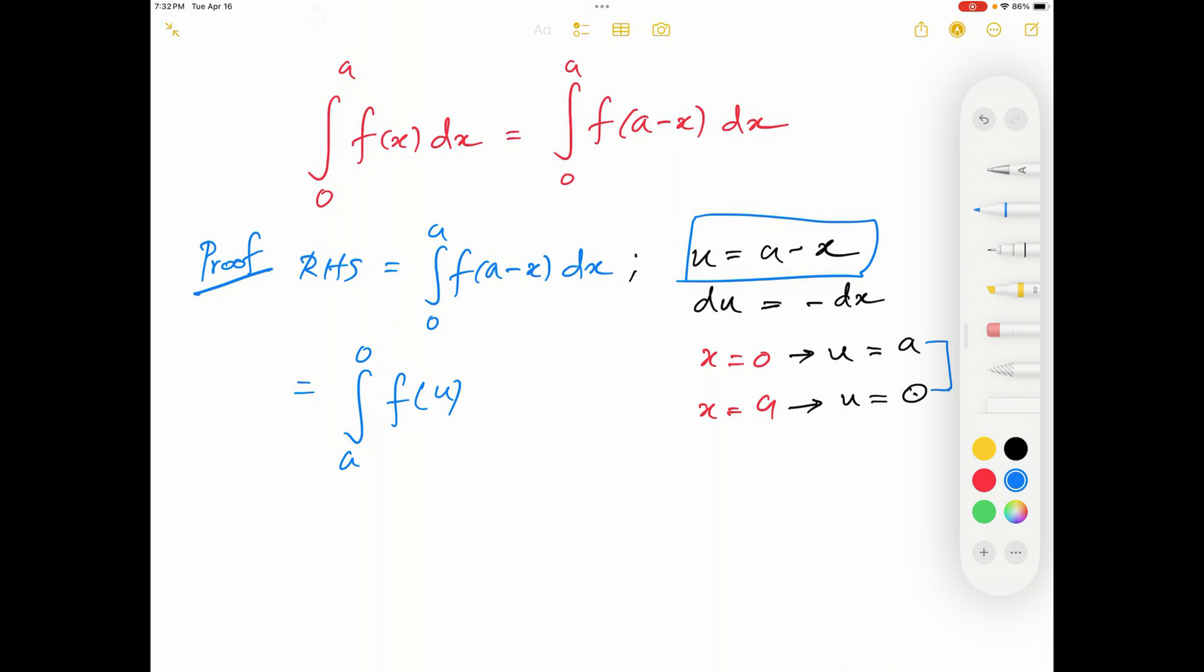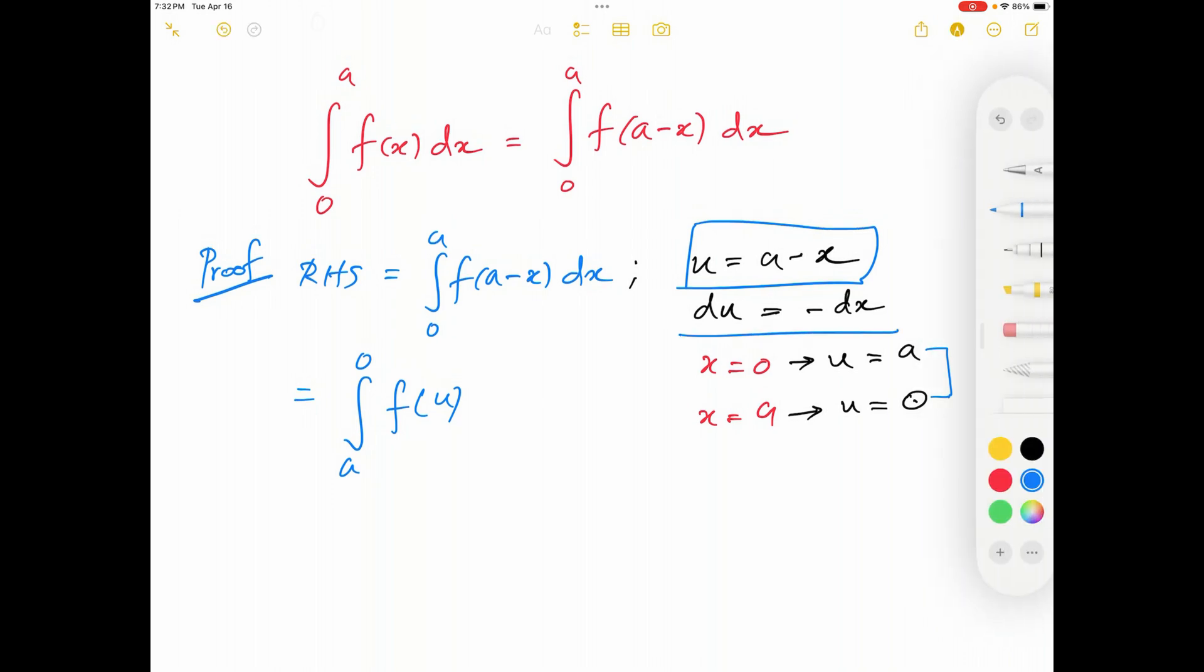And then I have dx. We saw that du is equal to negative dx, which means dx is equal to negative du. I will keep that negative symbol outside and write du.